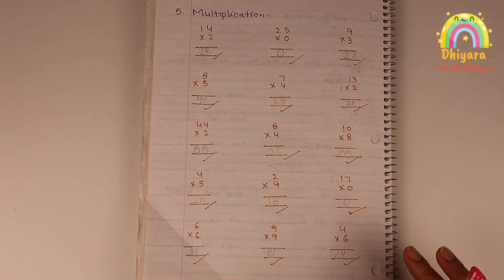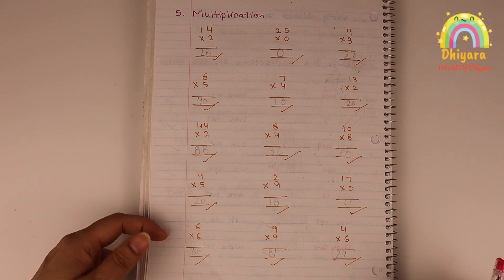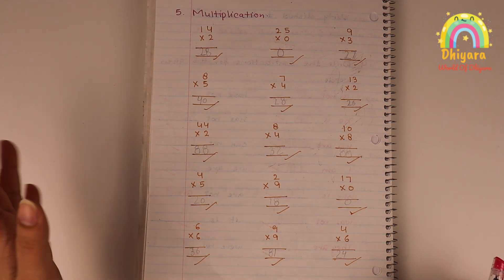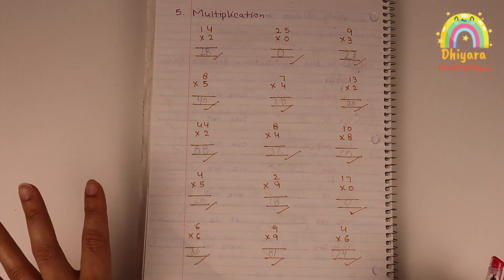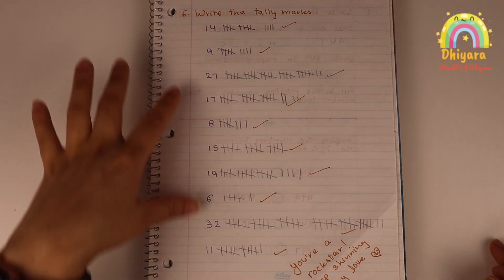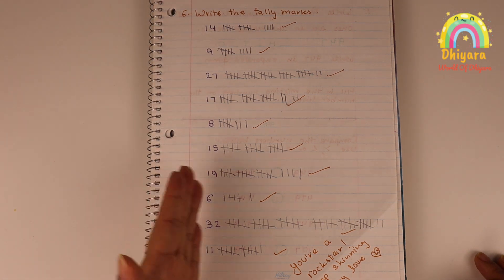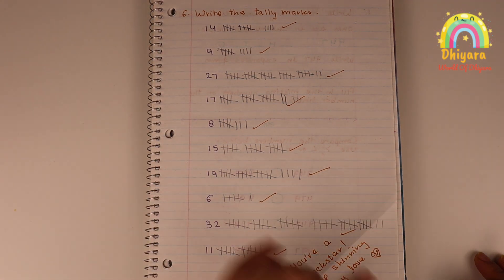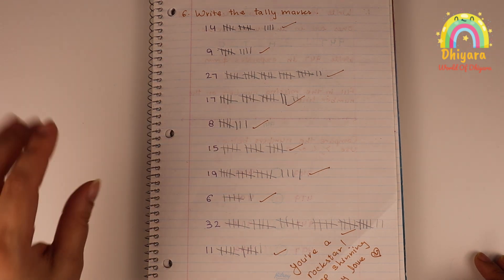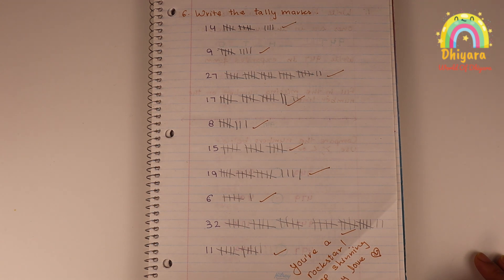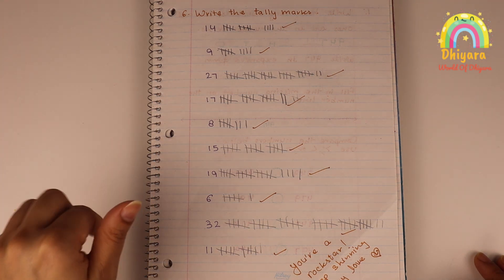The next worksheet is for multiplication. This is a very basic worksheet — I have randomly given problems up to 5. Next, we have tally marks. In the next worksheet, I have written a number and the tally marks are given. I have already shared a video on how to teach tally marks on my channel. If you haven't seen that video yet, you can check it — I will provide the link in the description.